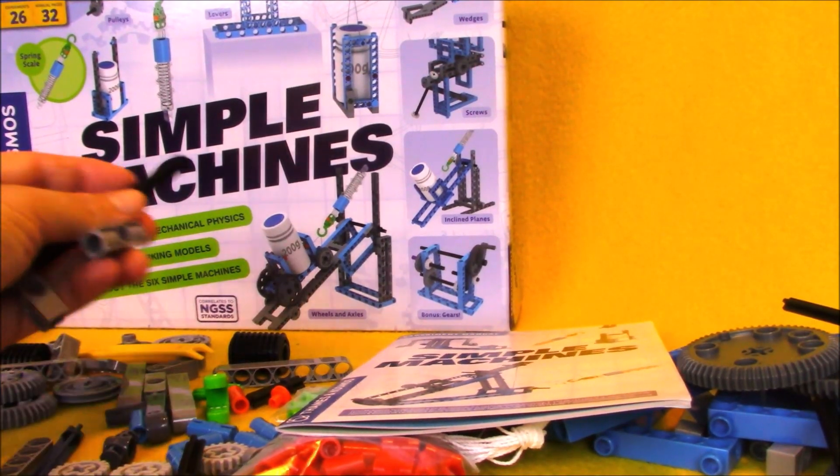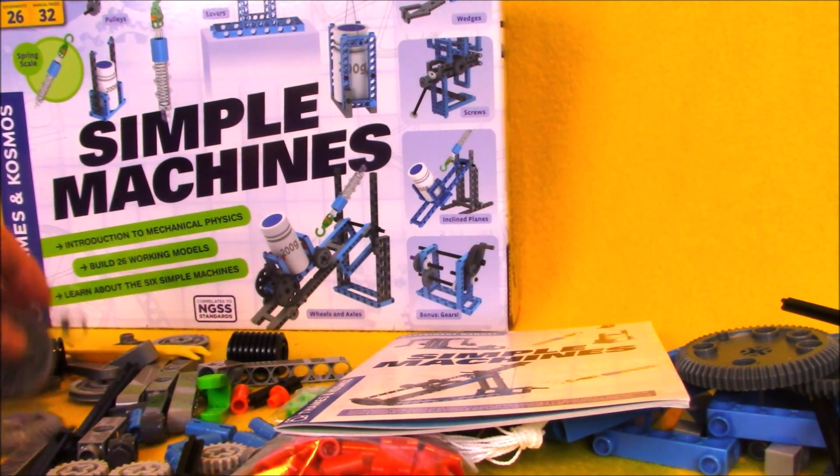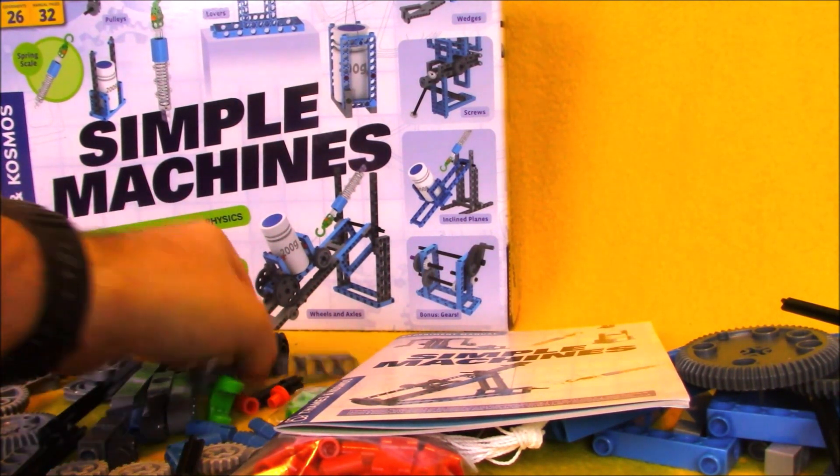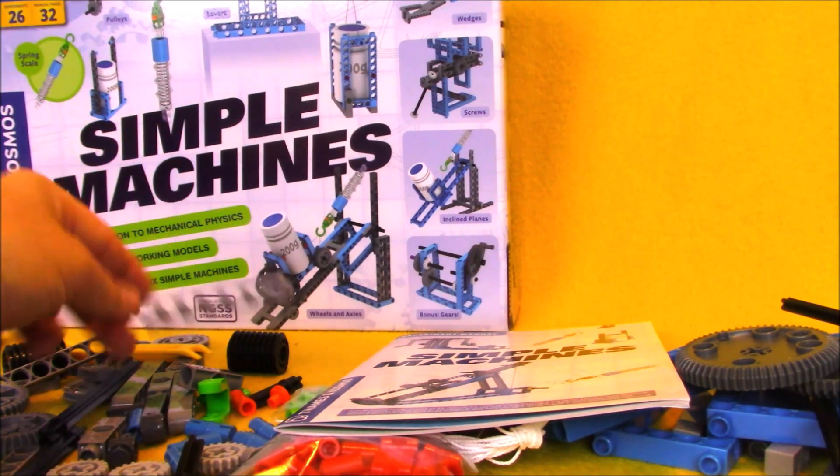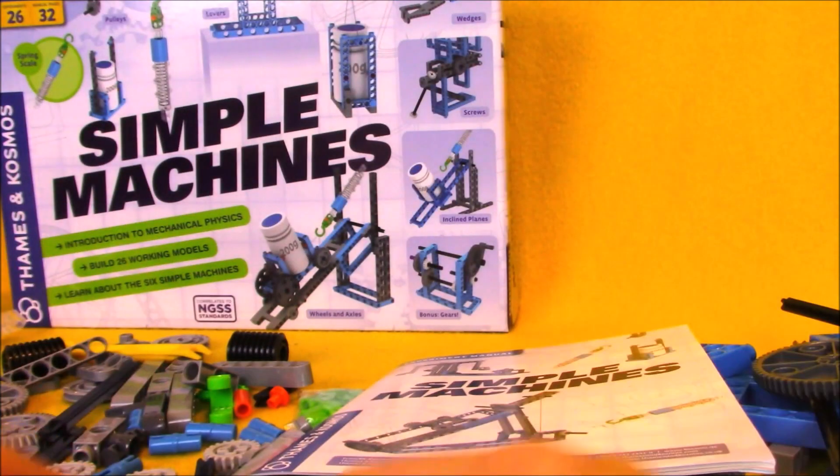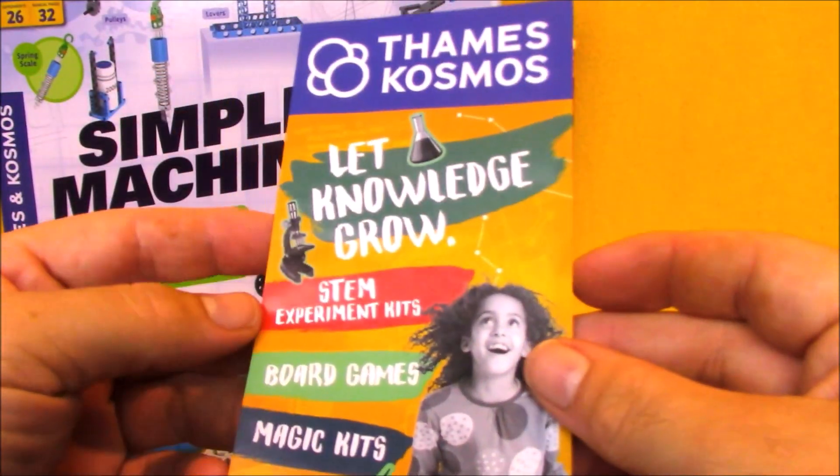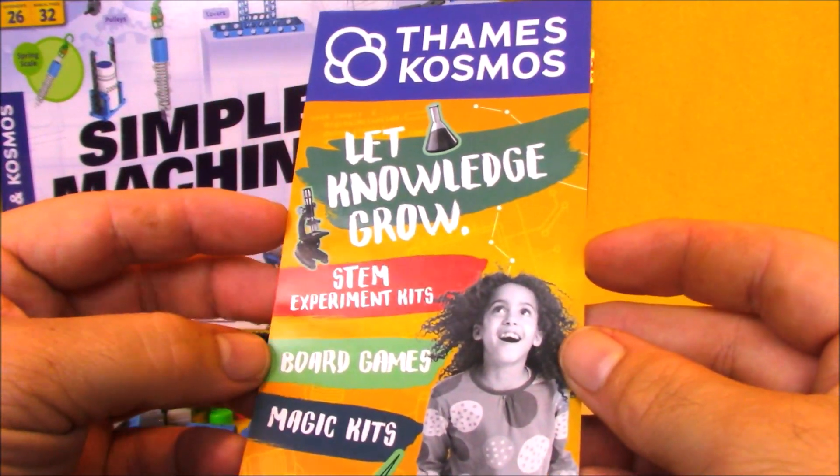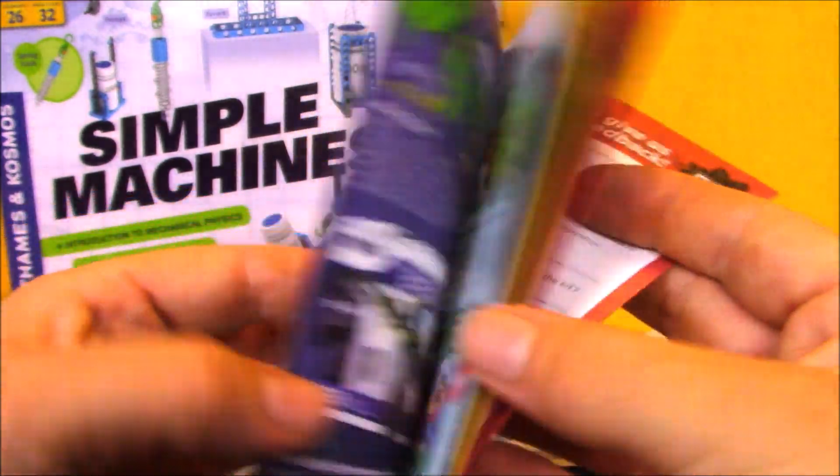Inside the kit there are a ton of parts and pieces: gears, axles, pieces to run the axles through, connectors. There's a manual that shows you how to build all the different experiments, and there's also a little pamphlet that shows off the other science, technology, engineering, and mathematics kits that they create.